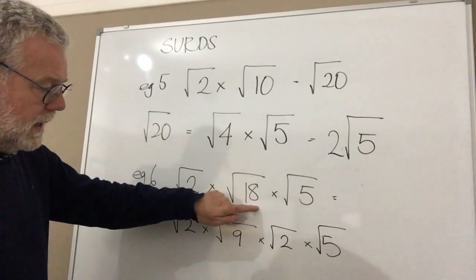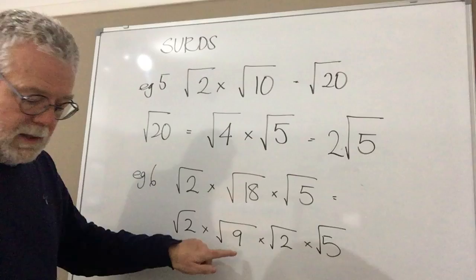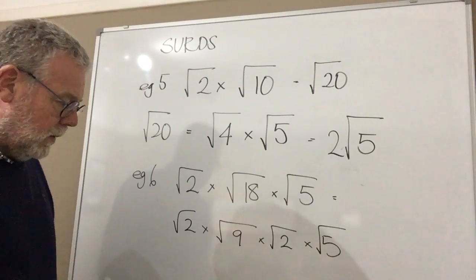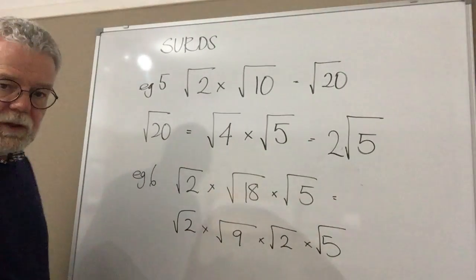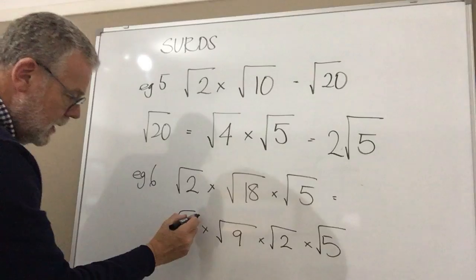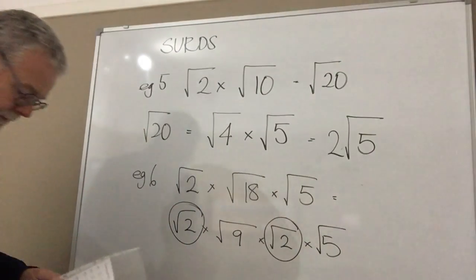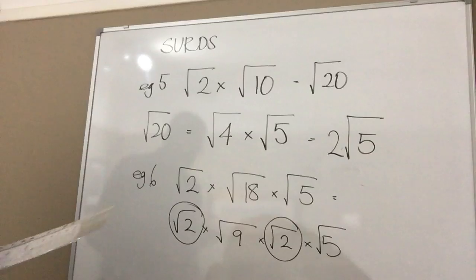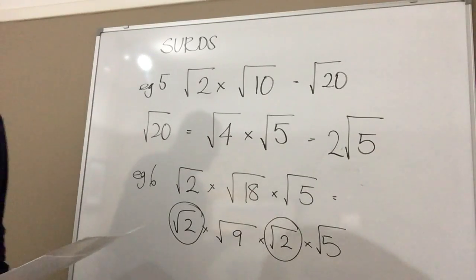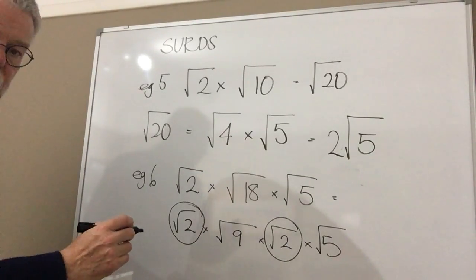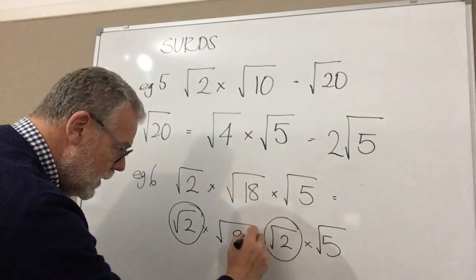Now that can be expressed like this can't it? Root 9 times by root 2 times by root 5. Can you see what we've done? We've broken 18 down into 9 and 2. Now there's something else that we can spot here. Okay, can you see I've got a root 2, I've got a root 2 and a root 2.